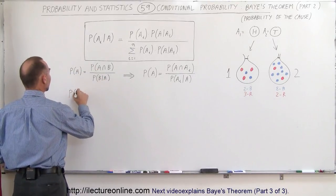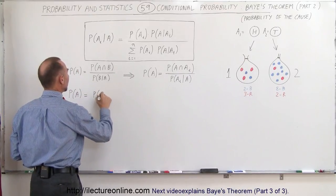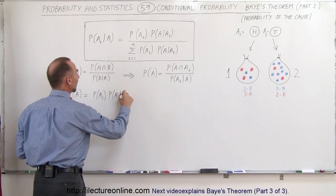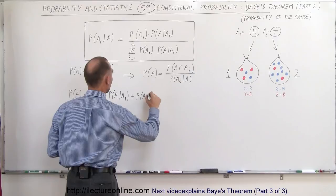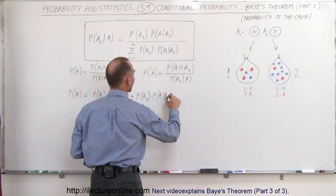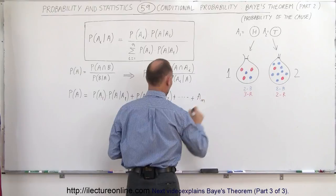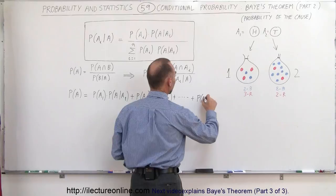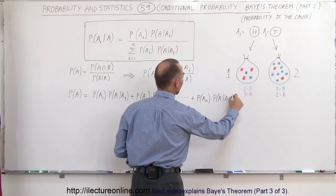We can say that the probability of the event A occurring according to Theorem 2 is equal to the probability of A sub 1 times the probability that A will occur provided that A sub 1 has occurred, plus the probability that A sub 2 will occur times the probability that A will occur provided A sub 2 has occurred, plus all the way to the probability that A sub n has occurred times the probability that A will occur provided A sub n has occurred.